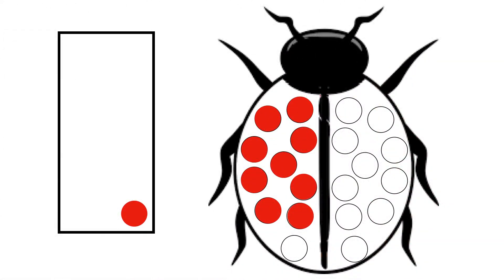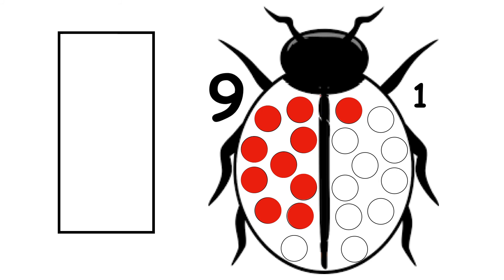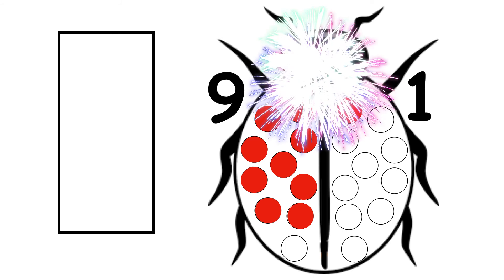Ladybird has 9 spots. 1, 2, 3, 4, 5, 6, 7, 8, 9. How many more does she need to make 10? 1. 9 and 1 make 10.